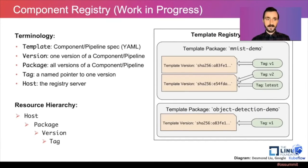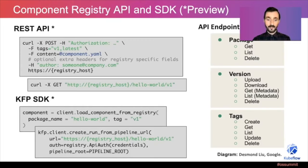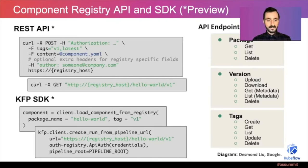This slide covers some terminology — templates, versions, packages, tags, and host. Here are samples of what the REST API could look like to interact with a registry, and what the newly introduced Kubeflow Pipelines SDK methods could look like. The REST API shows how to upload a component in the first snippet, the second snippet is to download the hello-world component at version v1, and at the bottom you can see how it looks in the SDK to load a component from a registry or to directly create a run from a component.